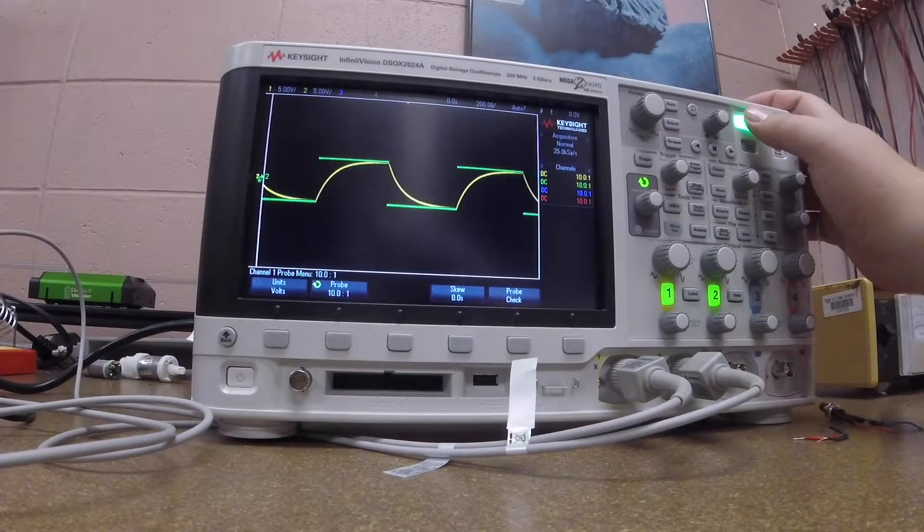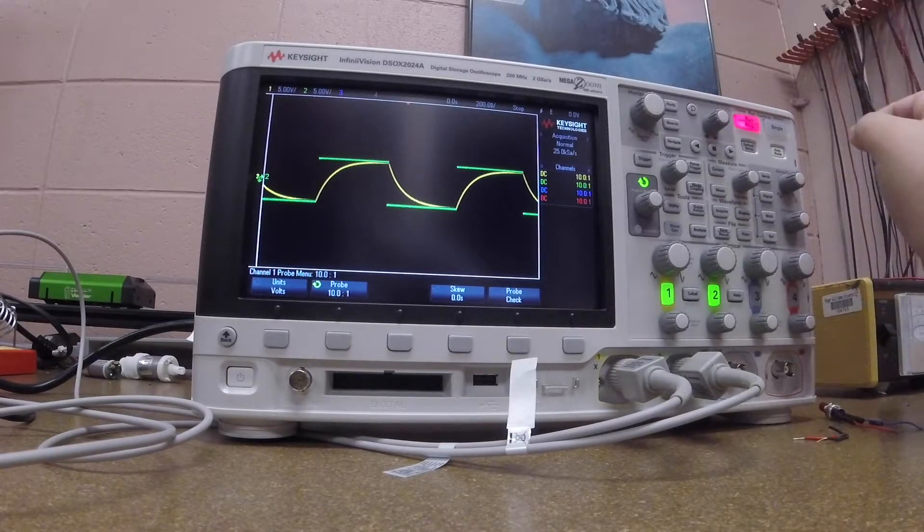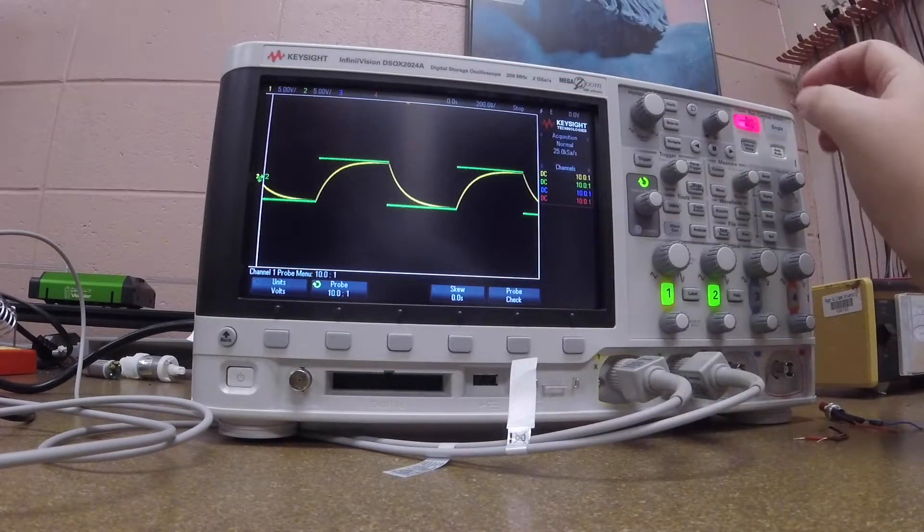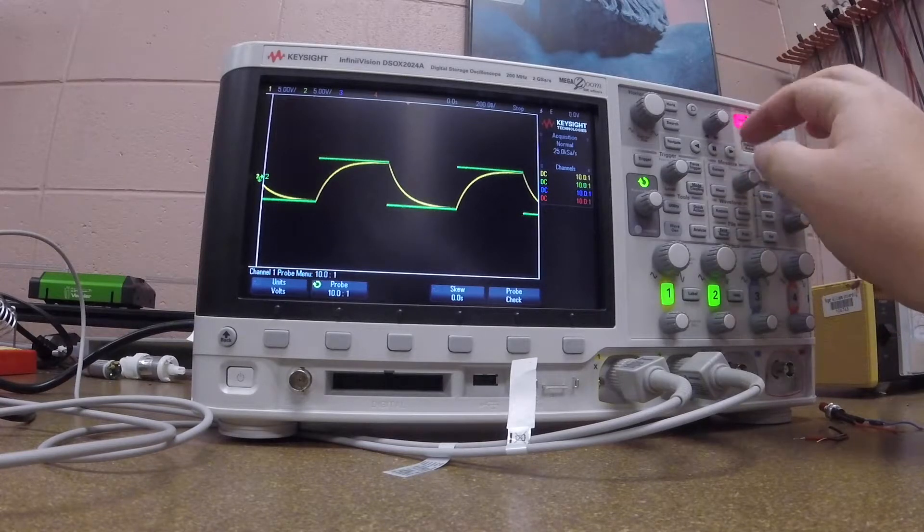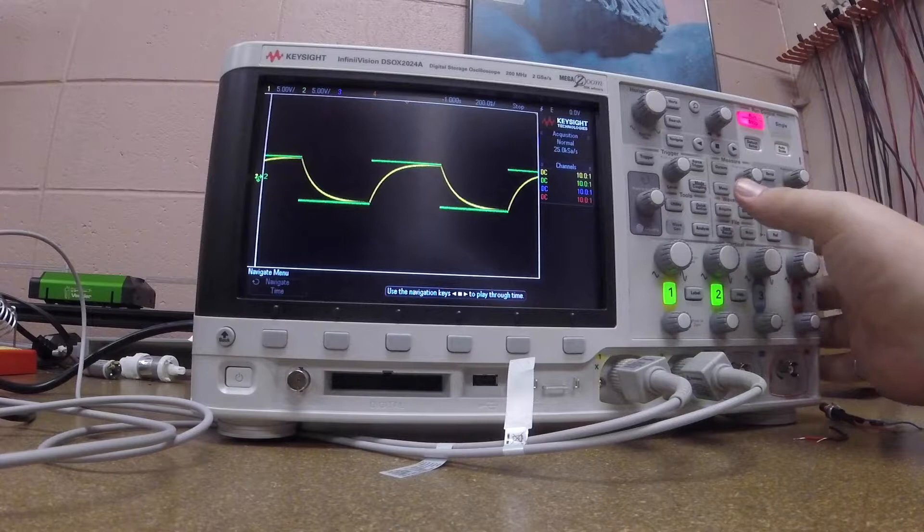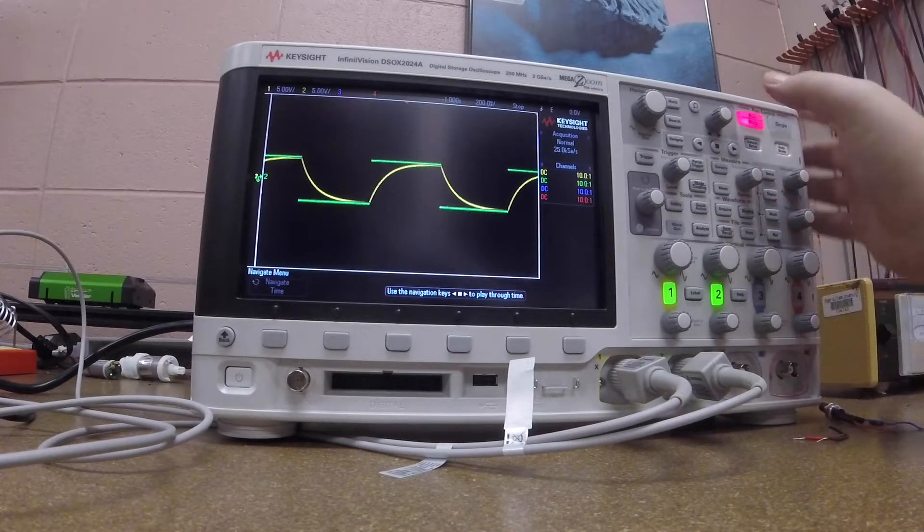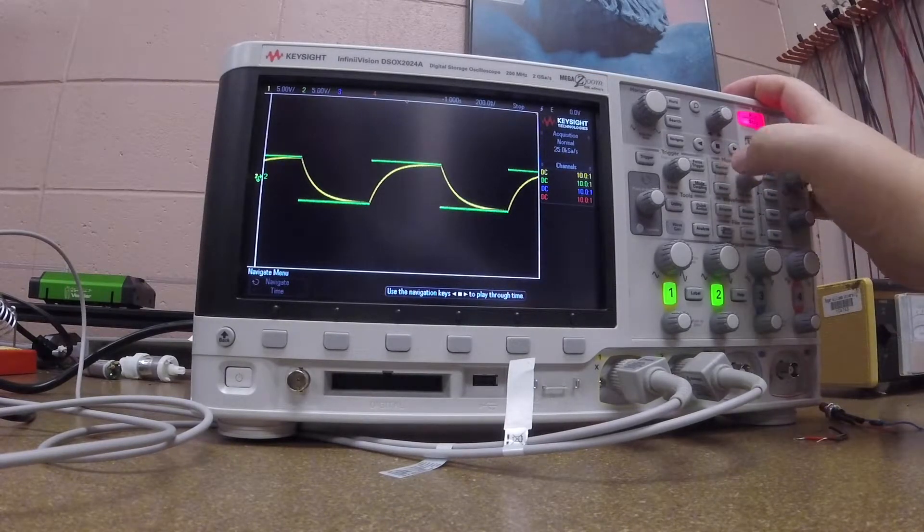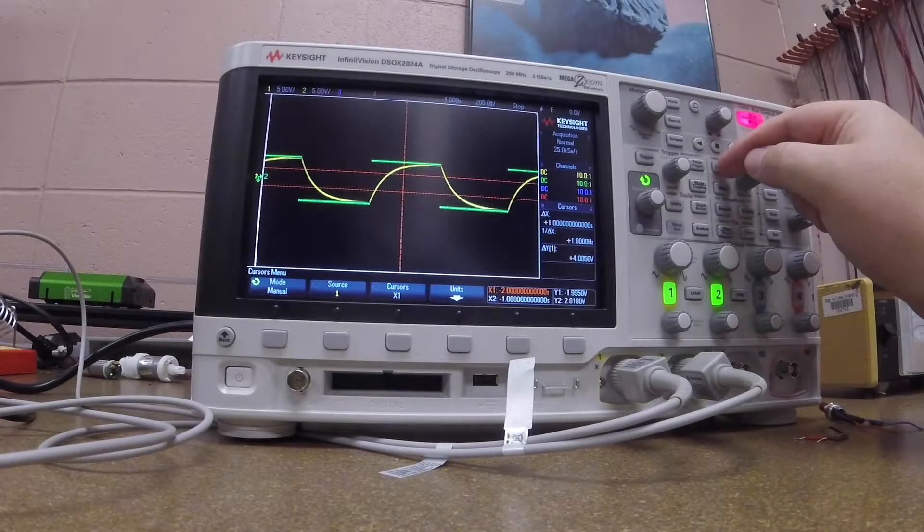I'm also able to run or stop using the run stop button. What that does is it stops the signal, so I can take measurements. I would be able to move the signal back and forth. What we're going to do first is show you how to measure. Typically, we like to measure using cursors. I press the cursors button.